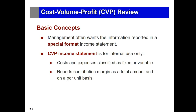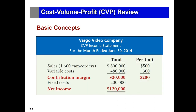Management needs information in a format that helps them make decisions. That format is the cost-volume-profit income statement. We don't change the basics of the income statement — we simply rearrange costs that are variable and those that are fixed, and we introduce what's called the contribution margin. Here's an example: we've looked at all the costs, determined which are variable and which are fixed, and produced a CVP income statement. Notice there's a new line — the contribution margin of $320,000.